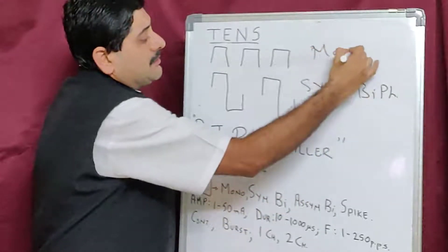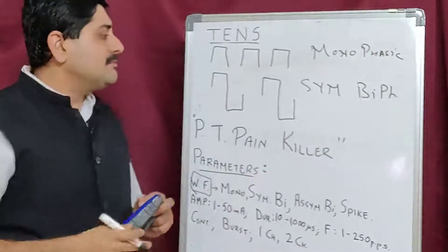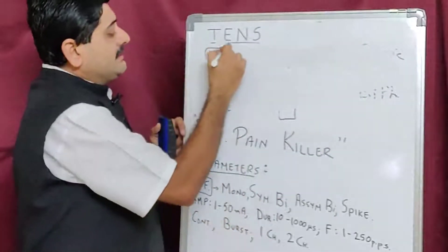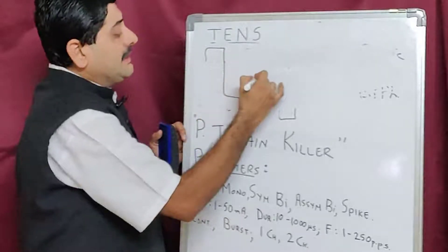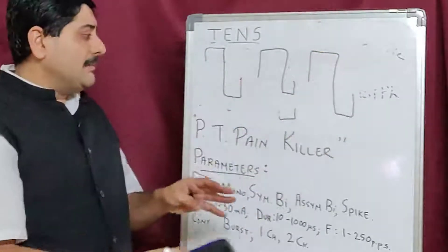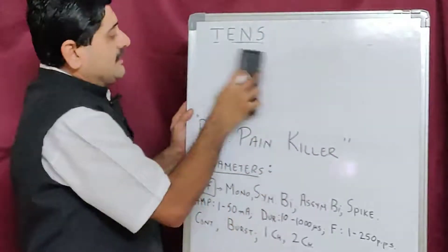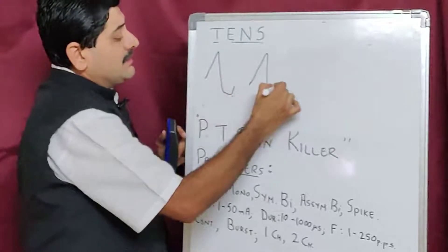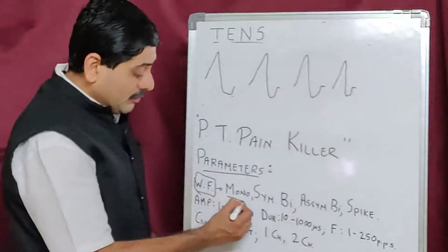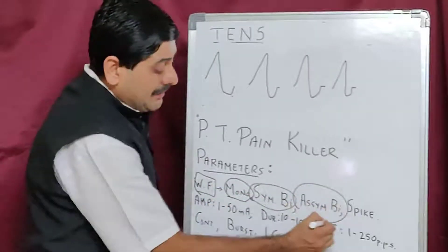Monophasic has a single phase, symmetrical biphasic has two equal phases. Then there is asymmetrical biphasic, where there is no symmetry between the upper and lower current. The last type is a twitch or spike current, where the current flows in a spike pattern. So there are four waveform types in total.